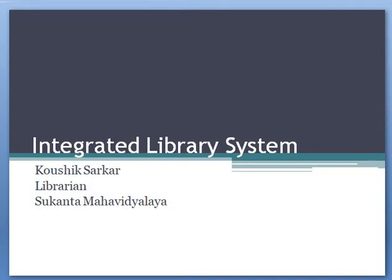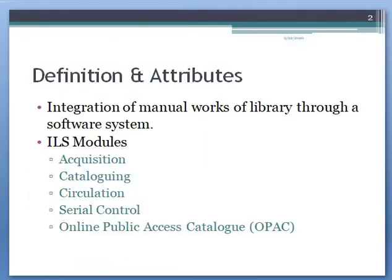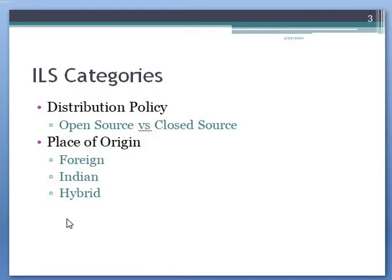Good evening friends, my name is Kaushik Sarkar and today's presentation is on Integrated Library System. An integrated library system is the culmination of all manual works of a library through a software representation. When we talk about manual works of a library, so many modules have come: acquisition, cataloging, circulation, serial control, and open access public catalog. These different manual activities have been transformed into a software interface where a system runs these modules.